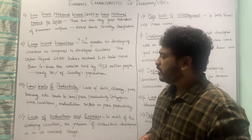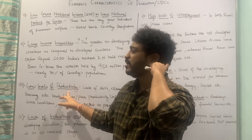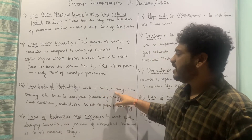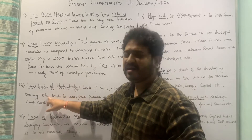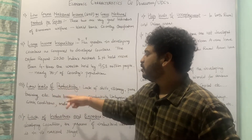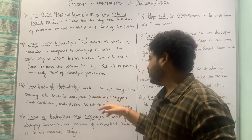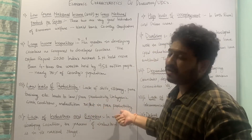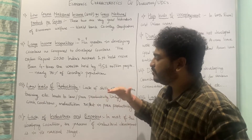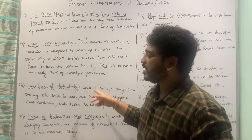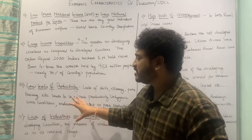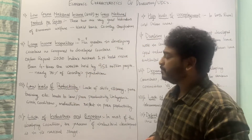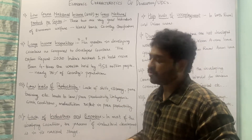Let us now move to the third point: low levels of productivity. Why are there low levels of productivity in developing countries? It is because there is a lack of skills, illiteracy, and poor training, leading to low productivity in terms of both labor and capital. Furthermore, unhygienic working conditions and malnutrition in the labor force reflect in poor productivity. These underlying conditions related to working conditions and healthcare of the worker add up to low labor productivity.